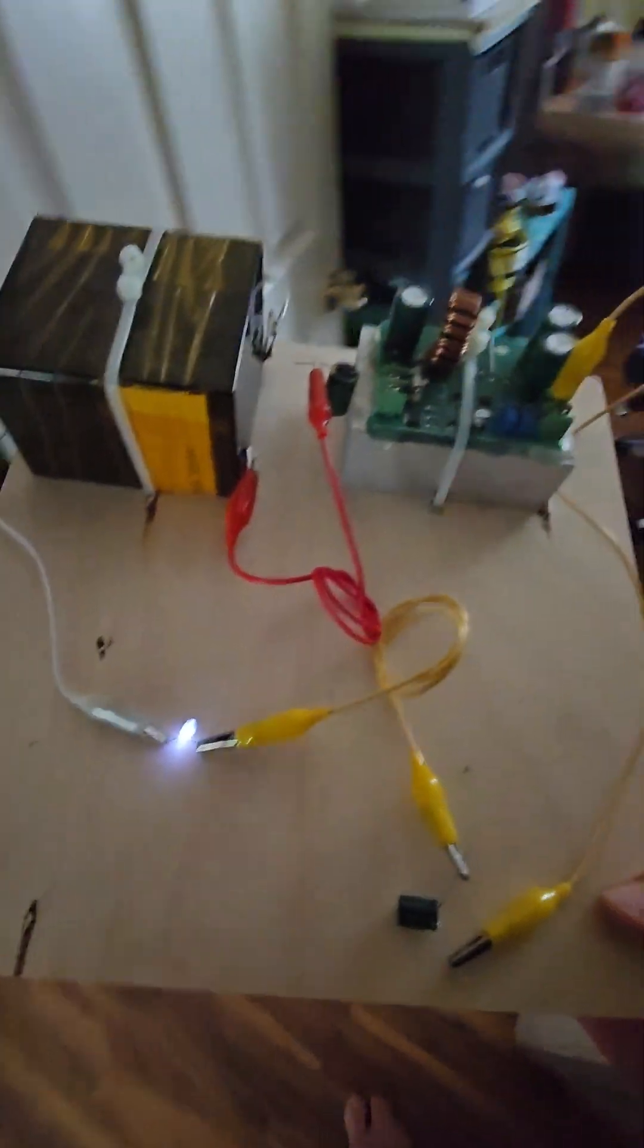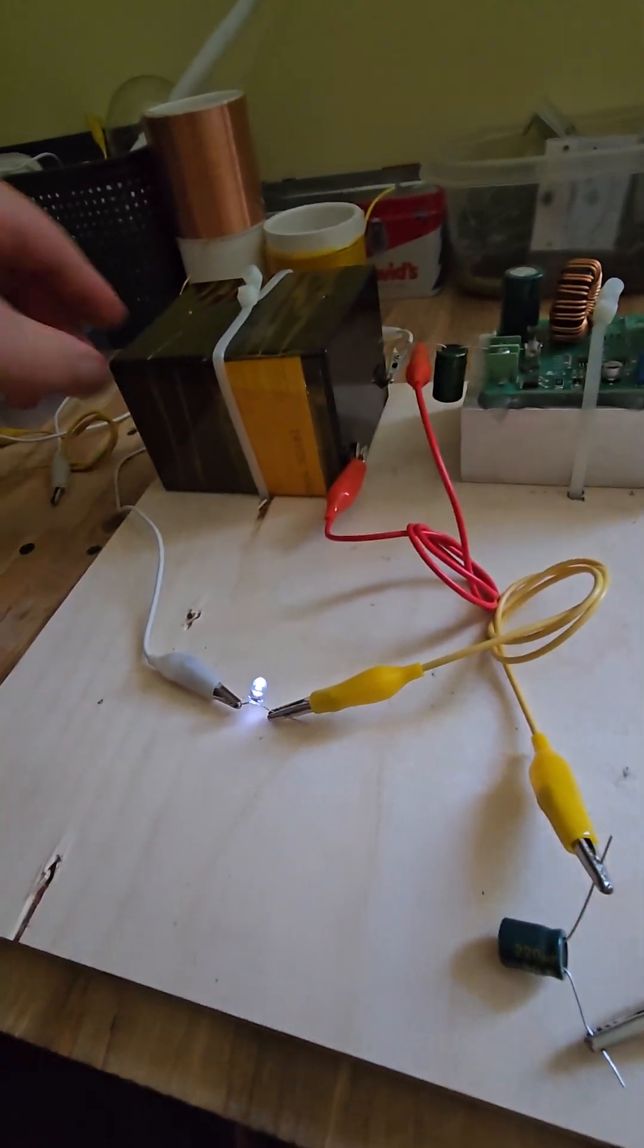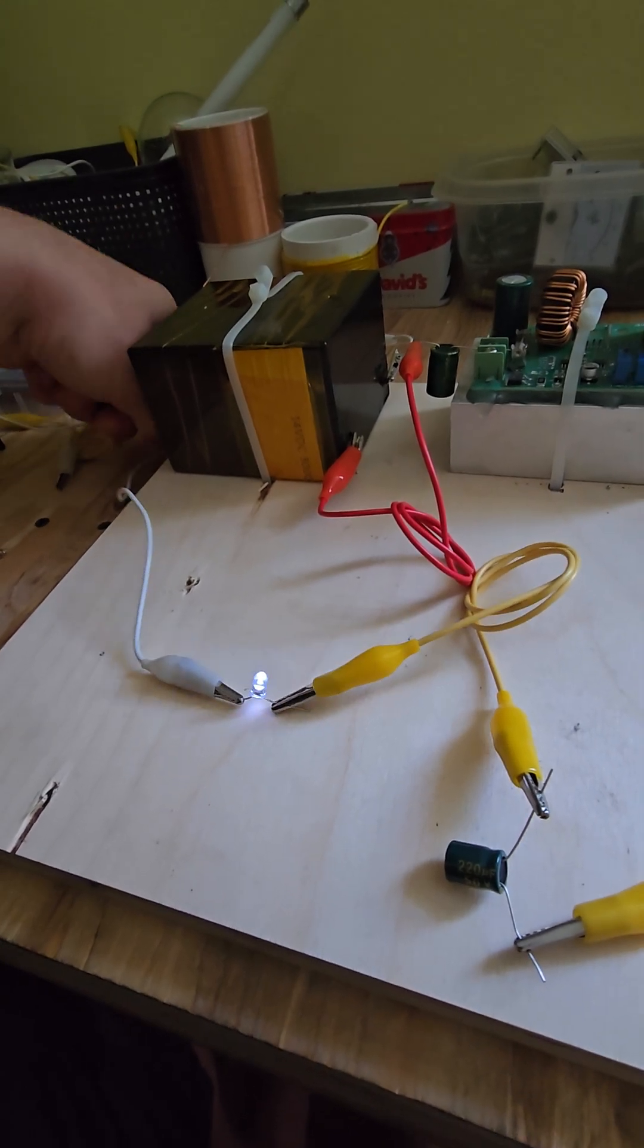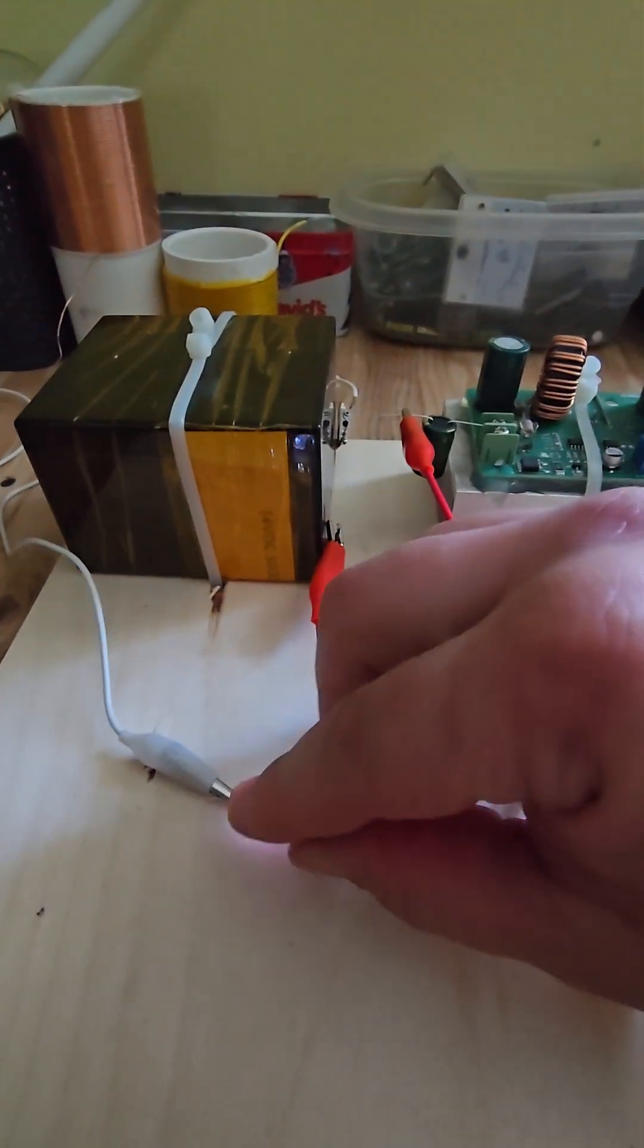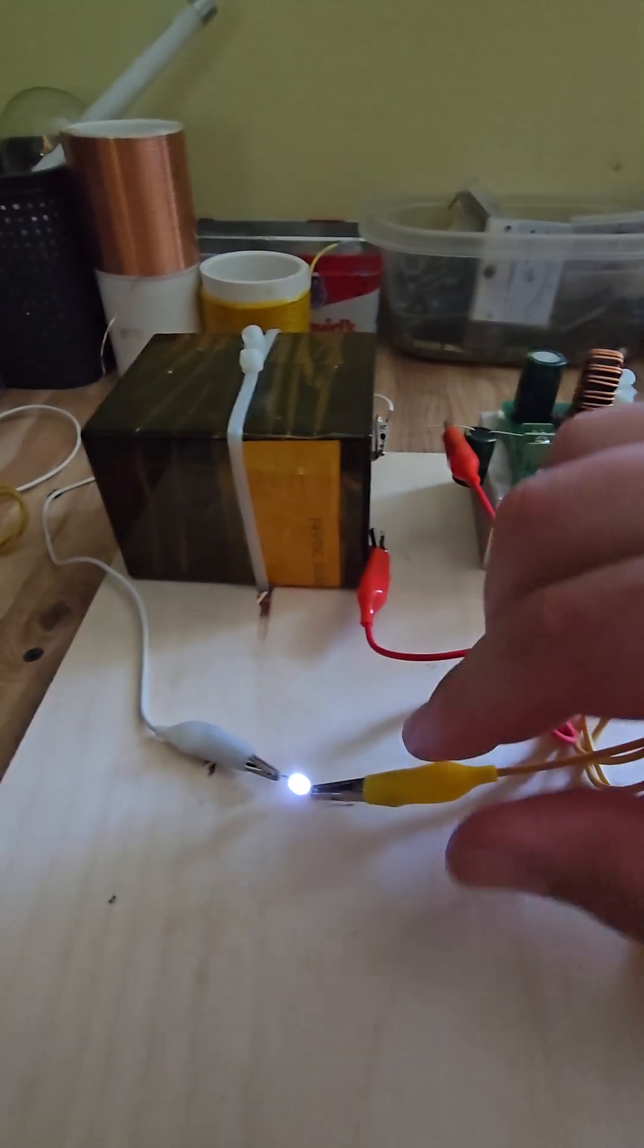So we either created some form of extremely novel energy harvesting device, or something else is going on that we're not quite sure of. I don't know. It's strange. And the voltage potential here isn't the voltage potential of the battery. This voltage potential here is like 13 volts or something weird. I'll show that.